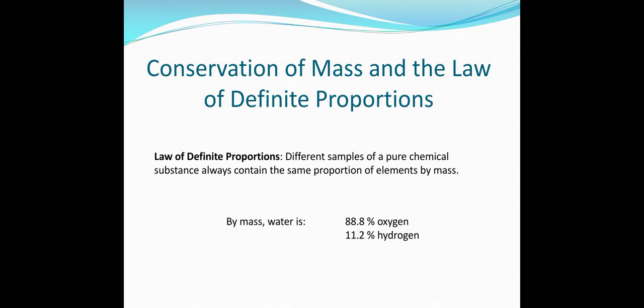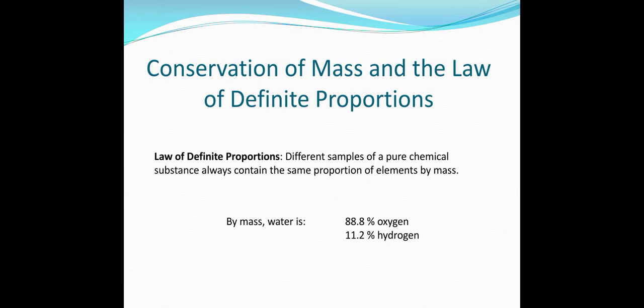The law of definite proportion states that different samples of a pure chemical substance always contain the same proportion of elements by mass. For example, water is H2O, containing two atoms of hydrogen and one atom of oxygen. In terms of mass proportion, oxygen is 88.8% and hydrogen is 11.2%.